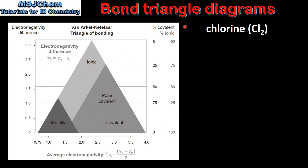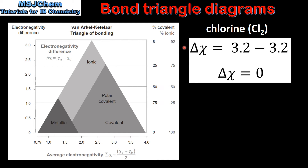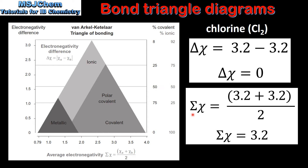Next we'll use the bond triangle diagram to determine the type of bonding in chlorine. First we calculate the difference in electronegativity between the atoms. Because we have the same type of atom bonded together, the difference in electronegativity is zero. The average electronegativity is calculated by adding together the electronegativity values of both atoms and dividing by two, giving us a value of 3.2.